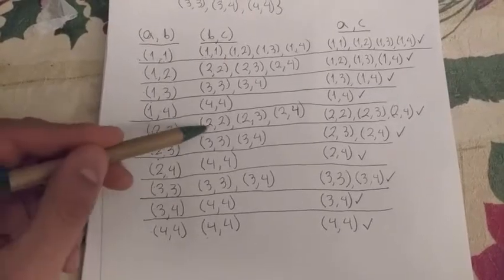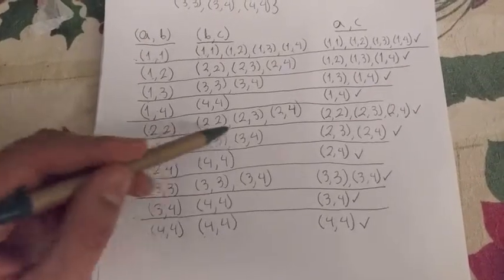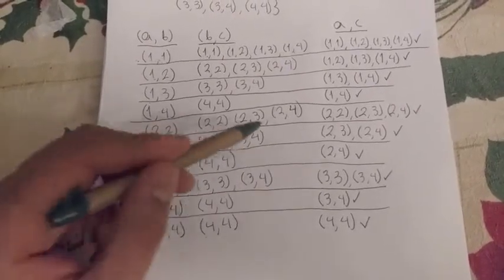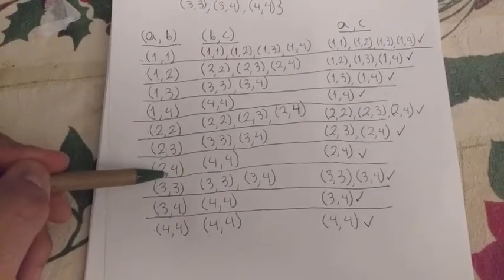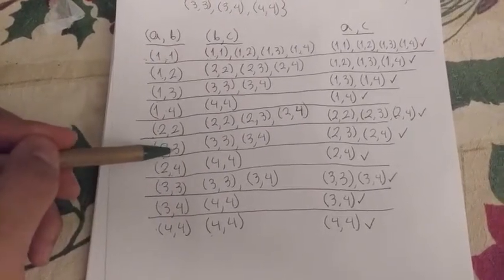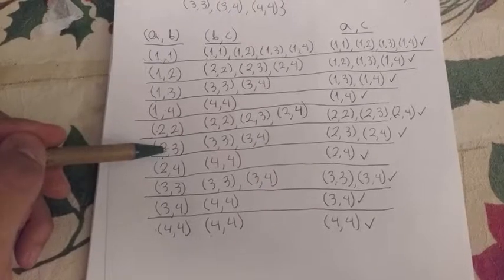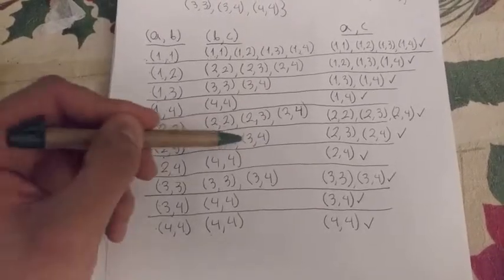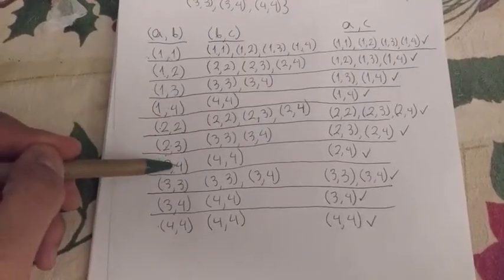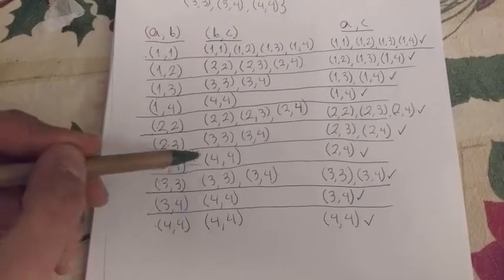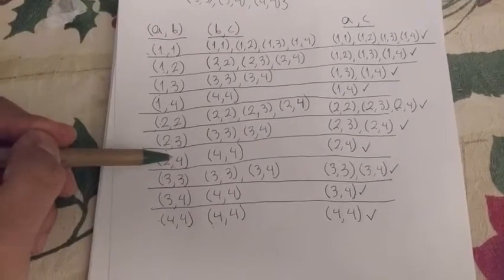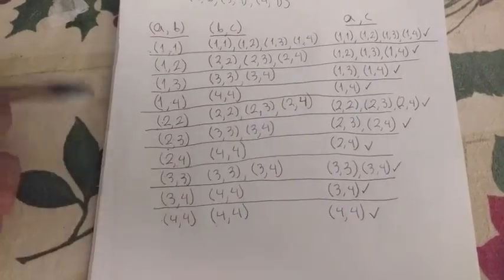Two, two. Two, two and two, two makes itself. Two, two and two, three makes two, three. And two, two and two, four makes two, four. Two, three and three, three makes two, three. It's right here. Two, three and three, four makes two, four. Two, four and four, four just makes two, four, which is itself, which is right here. So that belongs in the AC column.